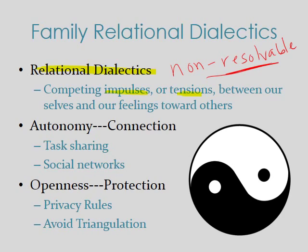The first dialectic is autonomy and connection. Autonomy is the degree to which you like being alone and having a relationship with yourself, and connection is the degree to which you like having a relationship with others. Some people fall more toward the autonomy end, some more toward the connection end, but for all people there will be some tension between the two. Learning to accept and manage it is an important part of developing strong communication habits. Task sharing can be a great way to be in the same space as family members without sacrificing your autonomy.